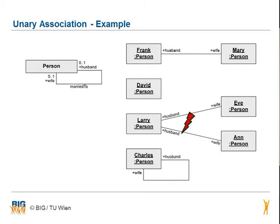Due to the multiplicity of 1 in the class diagram on both sides, it is not possible that Larry has two wives. In the class diagram you cannot make a difference between objects of the same class, so it could also occur that an object of class person is married to itself — for example, Charles is married to himself.